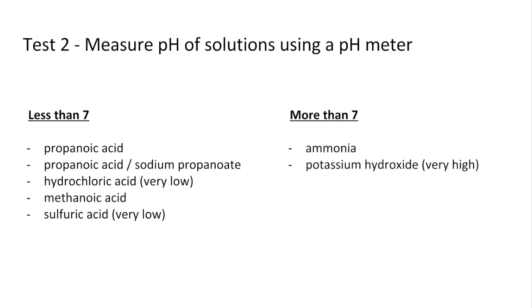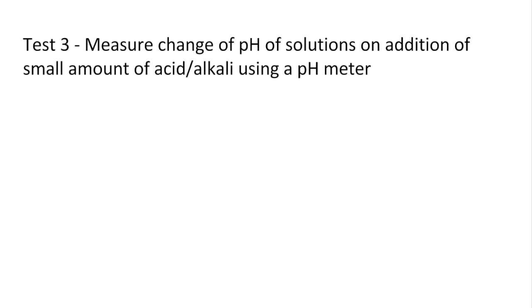Now we see more than seven for the alkaline substances and again you can see there after potassium hydroxide I've said that that would be very high. The third test I've said is to measure the change of pH of the solutions when you add a small amount of acid or alkali, and again would use the pH meter to do that.